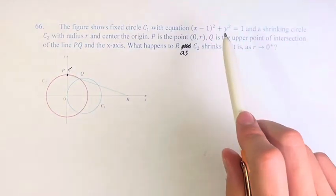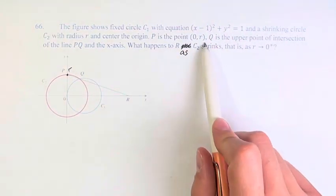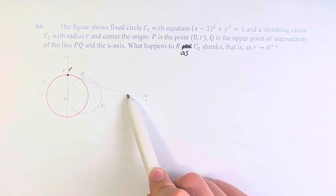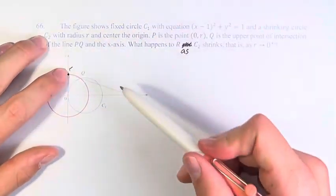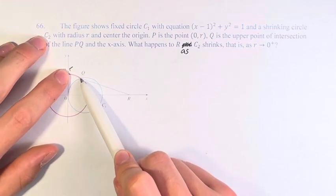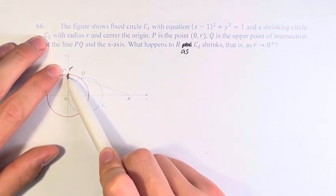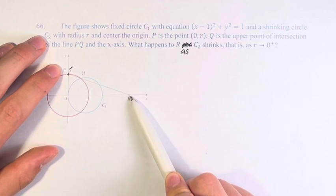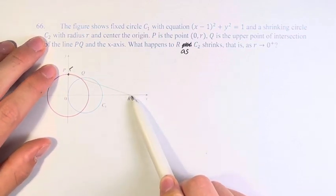We're asked what happens to R as C2 shrinks, where capital R is this point out here. We take P and the point where the two circles intersect, draw a line, and wherever that line goes, where it hits the x-axis is R.